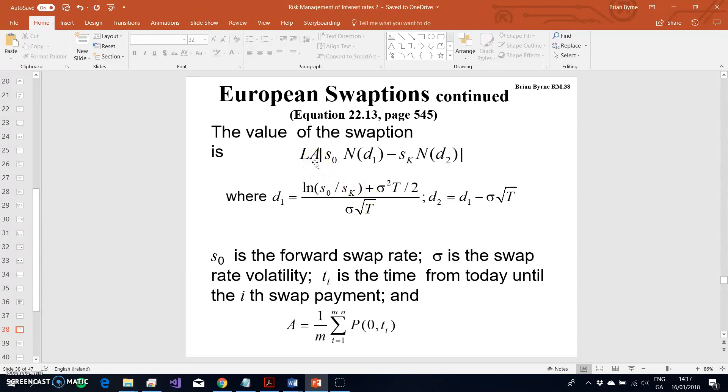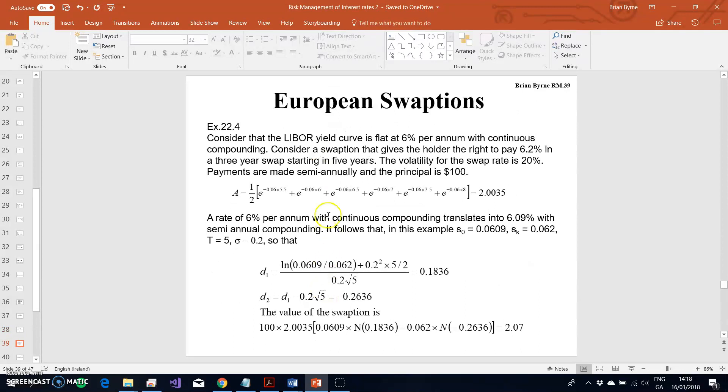We have an exponential term here with discounting by the continuous rate and by the time period. For a swaption, given that the swap occurs over a series of time periods, we've got to loop that. We have a three-year swap that is semi-annual, in other words we have six payments, and that annuity factor